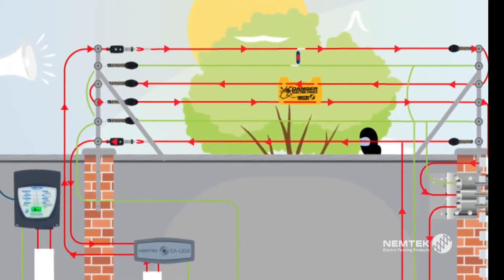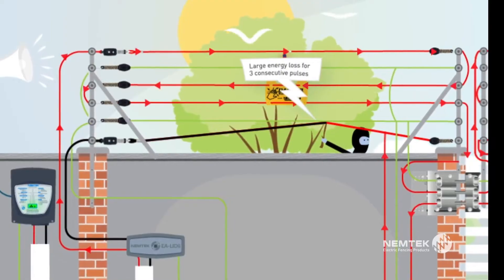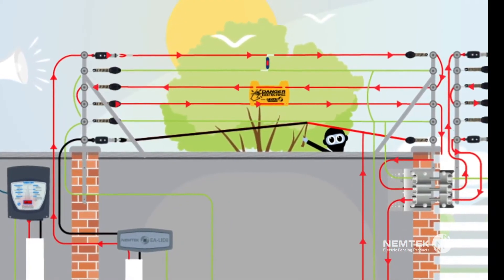If the earth and live wires touch, a short is created. This interruption over three consecutive high voltage pulses will cause the energizer display to go red and the alarm to be triggered.